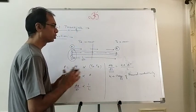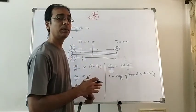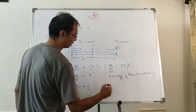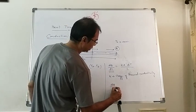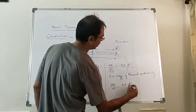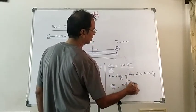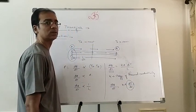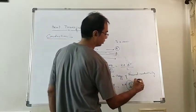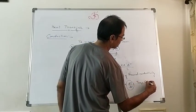Most questions we are going to solve are based on steady state. For the unsteady state, we can also write dQ/dt = k·A·(dT/dx), where dT/dx is called the temperature gradient — that is, the rate of fall of temperature per unit length.